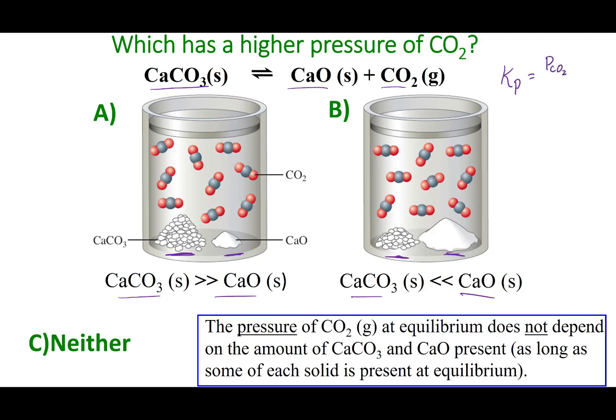So the Kp is going to be the pressure of my products times one. And I'm going to divide by my reactants, which also happens to be a solid, so I'm going to put one for my solid. So that means the Kp is just based off the pressure of CO2.